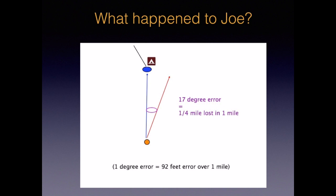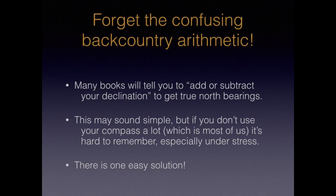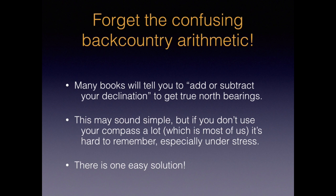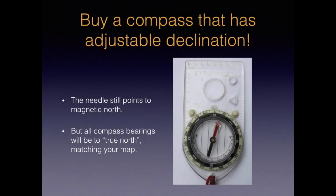So, how do we deal with declination? First off, forget the backcountry math. The confusion over declination usually comes from people struggling with an old-school technique of adding or subtracting your declination to match the magnetic bearing to the map. This method is taught in a lot of navigation books and many YouTube videos. The math may seem simple when you first learn it, but remembering it years from now when you're stressed out and lost is going to be really hard. Most of us don't use a compass very often, so we don't get a lot of practice. Happily, there is one easy solution: simply spend a few extra bucks and buy a good quality compass with adjustable declination. Your compass needle still points to magnetic north — that's never going to change — but after declination is adjusted, which takes just a few seconds, you now measure bearings to true north, which makes them match your map and eliminates all the confusing arithmetic.